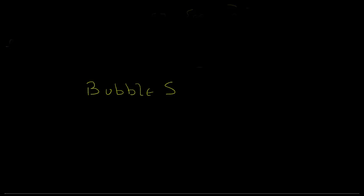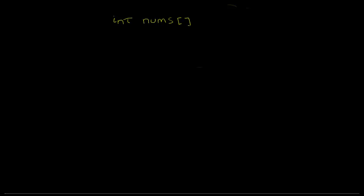Hello, I'm Jacob Rabinowitz and welcome to my first video on Java. Today I'm going to be talking to you about the bubble sort, which they tell you about pretty soon after you've been introduced to arrays. So let's make ourselves an array of integers. Let's call it nums because it's going to have nothing in it but numbers. And let's give it some content: 99, negative 10, 100123 and 18.